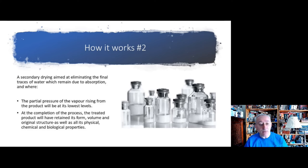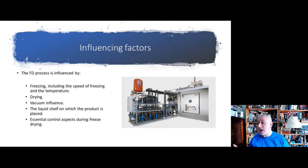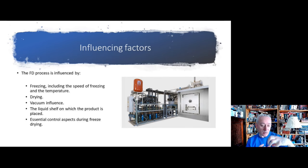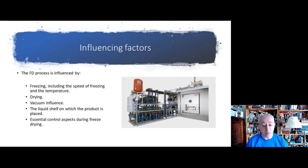There are some influencing factors that can affect how freeze drying works or doesn't work. The most important critical quality attributes associated with freeze drying are the state of the product, its protein conformation, its stability, the residual moisture content, and the freeze dried product appearance — what's called the cake — and also to make sure that the reconstitution time is acceptable, which would be something a biochemistry department would look at.